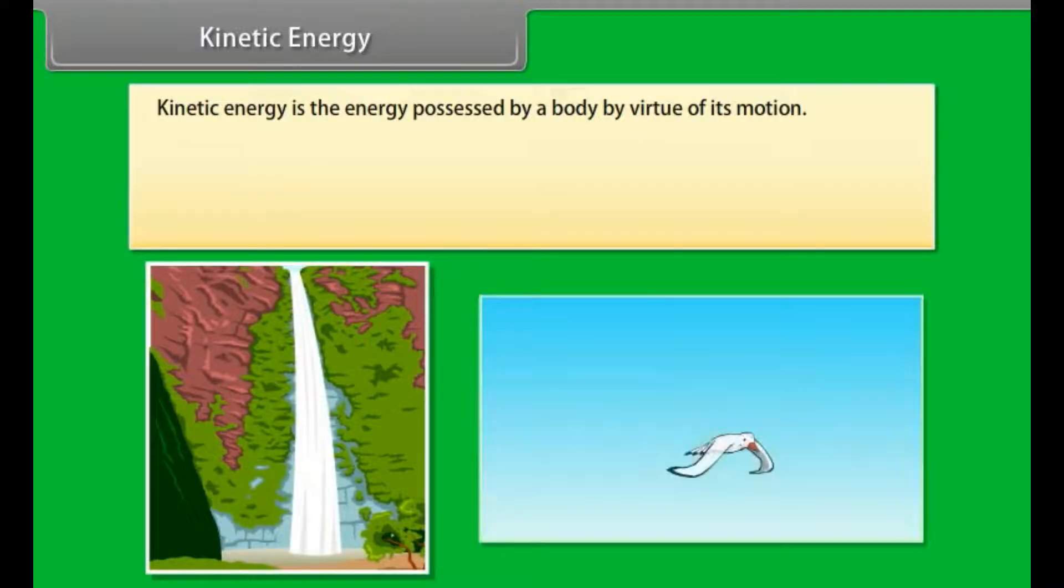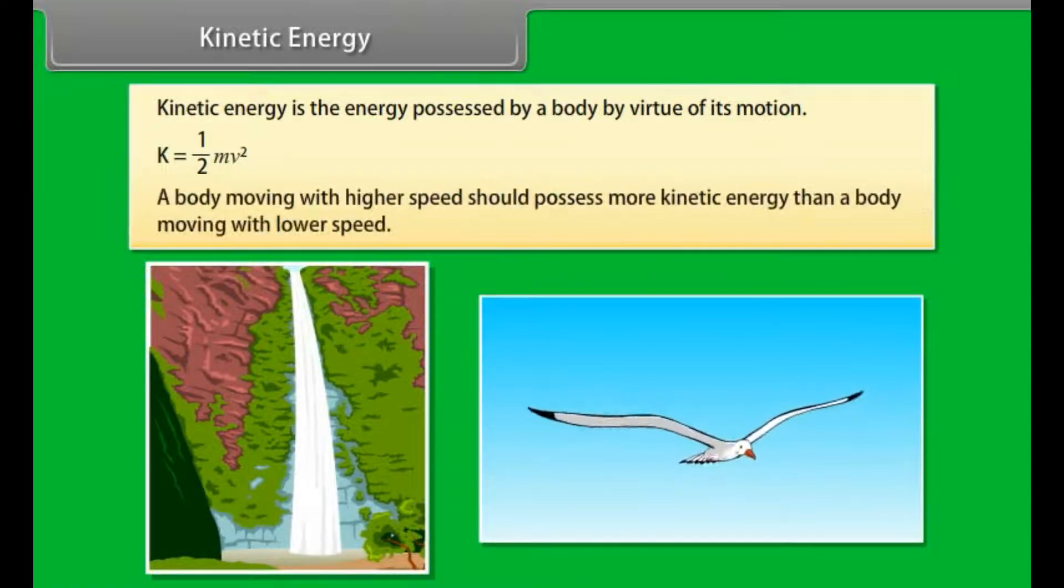Kinetic energy. Kinetic energy is the energy possessed by a body by virtue of its motion. Kinetic energy = ½mv². Running water, flying bird are few examples of bodies possessing kinetic energy. It is logical that a body moving with a higher speed should possess more kinetic energy than a body moving with lower speed.